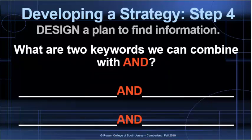What are some keywords that we can combine with AND? We could combine bullying AND mental illness, or we could also combine cyberbullying AND depression. By doing this, we're saying that we only want results that have both bullying and mental illness, or we only want results that have both cyberbullying and depression.